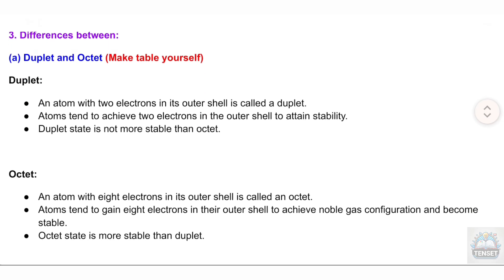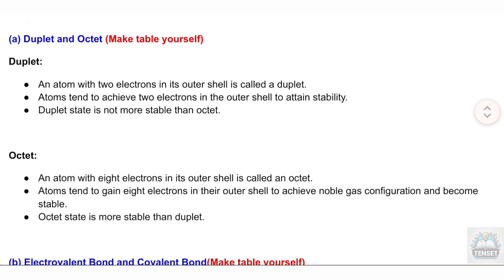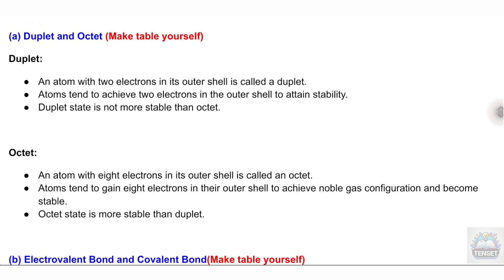Section 3: Differences. A. Duplet and Octet — make a table. Duplet: An atom with two electrons in its outer shell is called a duplet. Atoms tend to achieve two electrons in the outer shell to attain stability. Duplet state is not more stable than octet. Octet: An atom with eight electrons in its outer shell is called an octet. Atoms tend to gain eight electrons in their outer shell to achieve noble gas configuration and become stable. Octet state is more stable than duplet.